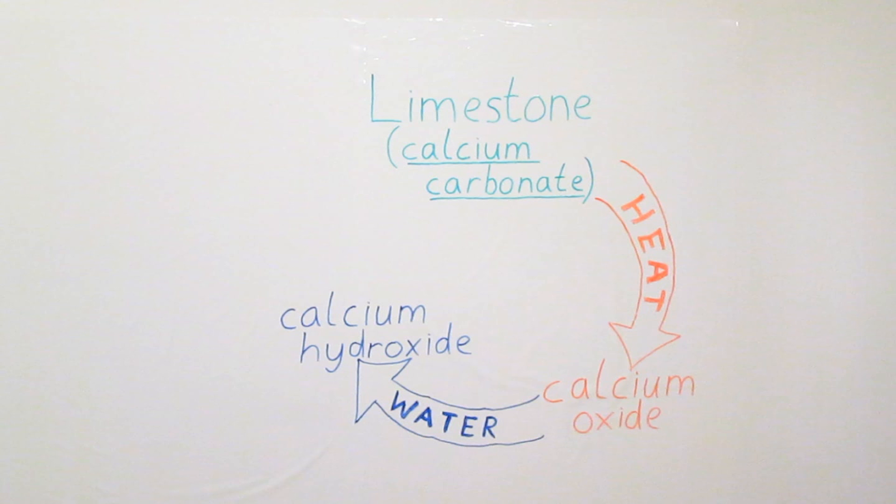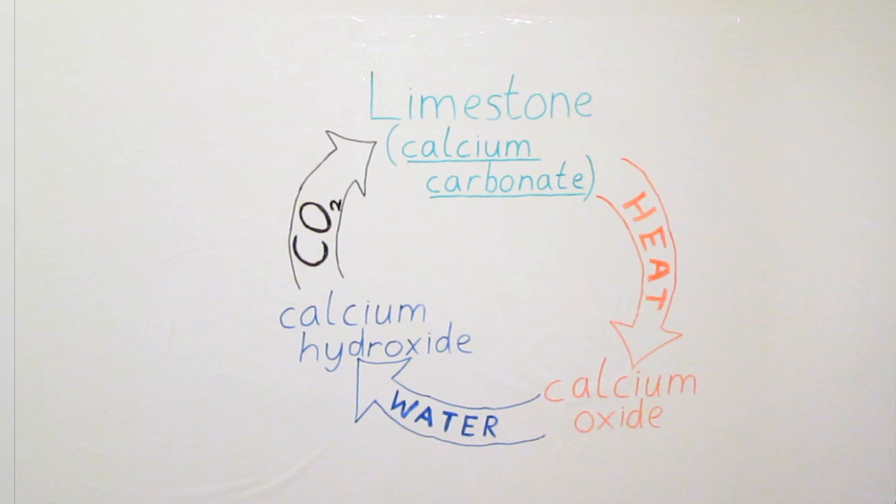And finally, if we now bubble carbon dioxide gas back through the lime water, that lime water will start to go cloudy and it will form a white precipitate. That's tiny little particles of white powder that are suspended in the solution. And those tiny little particles of white powder are calcium carbonate. And we've got back to the start of our cycle.